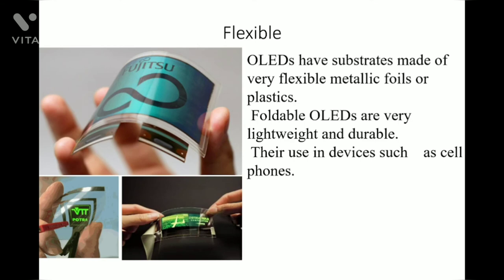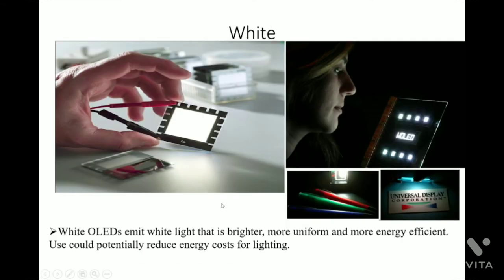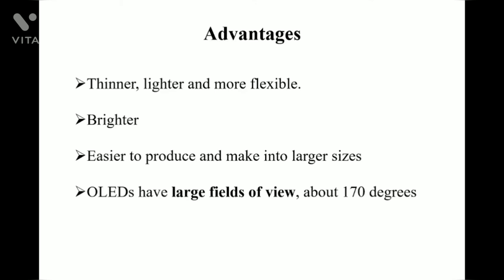Flexible OLEDs have a substrate made of very flexible metallic foils or plastics. Foldable OLEDs are very lightweight and durable, and are used in devices such as cell phones. Flexible OLEDs are also brighter, easier to produce, and can be made into larger sizes.